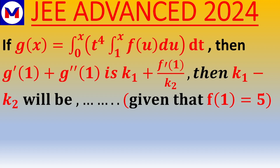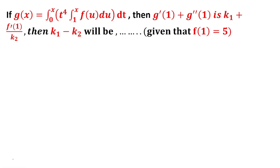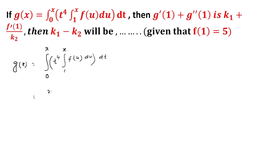The value of f(1) is given, and we need to find k1 minus k2 in the form k1 plus f'(1) by k2, so we have to find the values of k1 and k2. We have g(x) equal to the integral from 0 to x of t^4 times the integral from 1 to x of f(u) du, dt. Evaluating the inner part: t^5 by 5, with upper limit x, this becomes x^5 upon 5 times the integral from 1 to x of f(u) du.